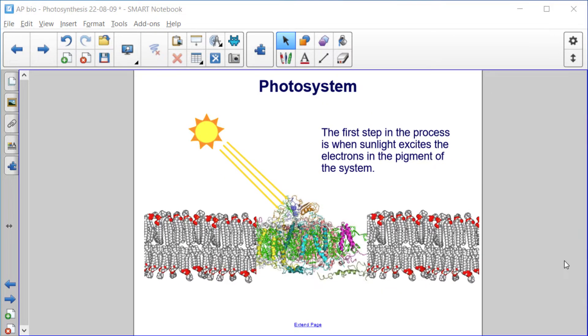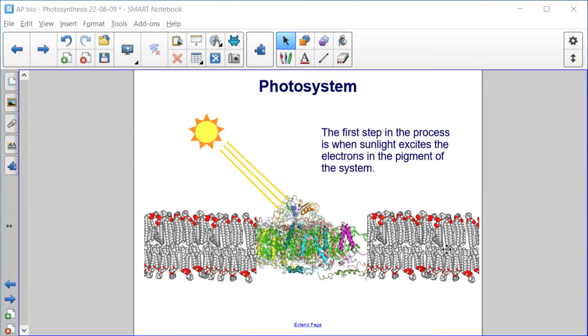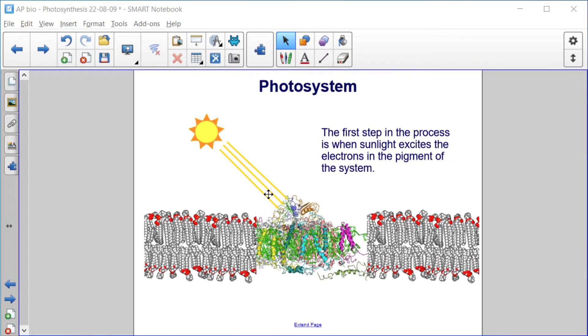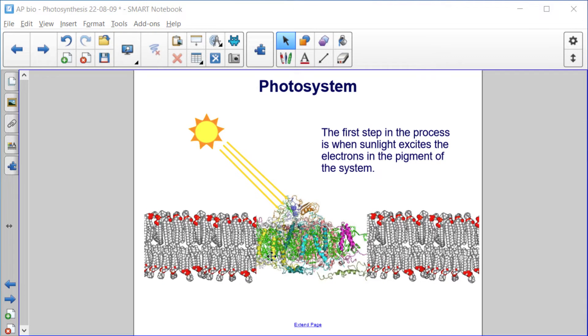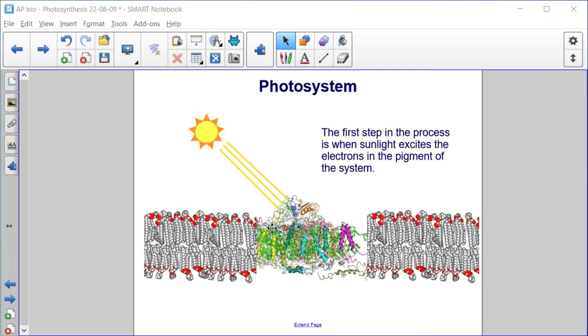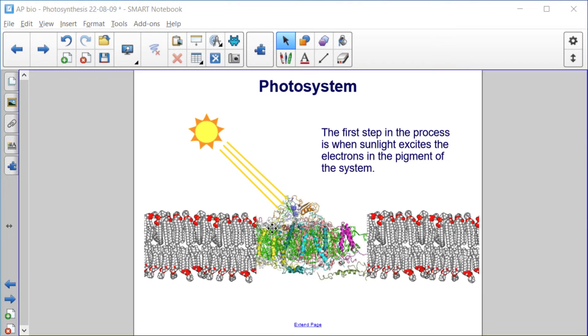The first step in this process is when sunlight, so light from the sun, excites electrons in the pigment of the system. There's a pigment in the photosystem that we talked about in the previous section.